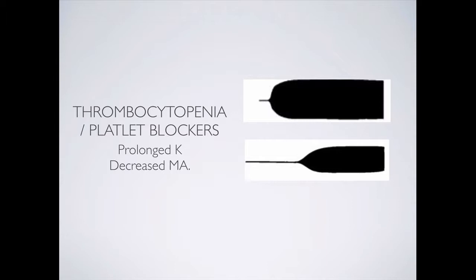Whenever I see thrombocytopenics or patients with bleeds on platelet blockers, they tend to have a more prolonged K and a decreased maximal amplitude, and the clot takes a long, smooth curve to reach it. I see this a lot more with Plavix than with aspirin — it may have to do with Plavix's stopping power. I also tend to require more platelets when I see this with Plavix than with aspirin to correct the curve.